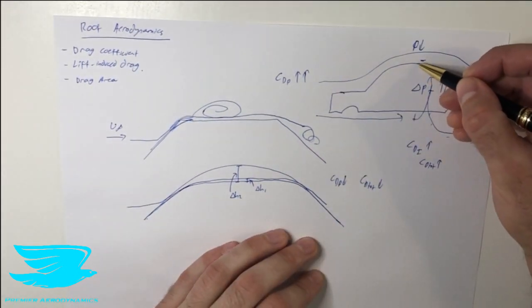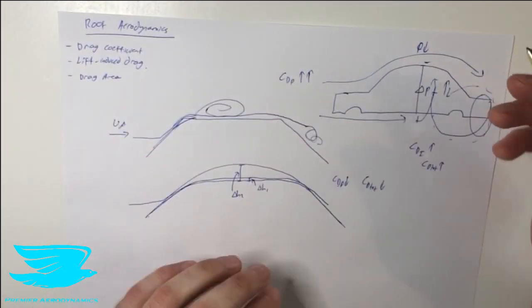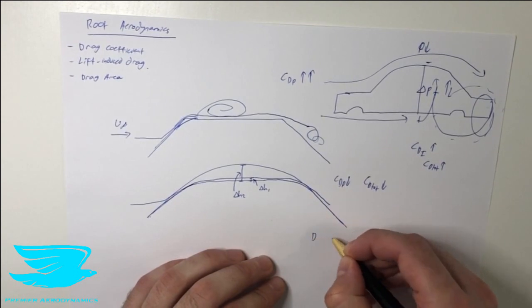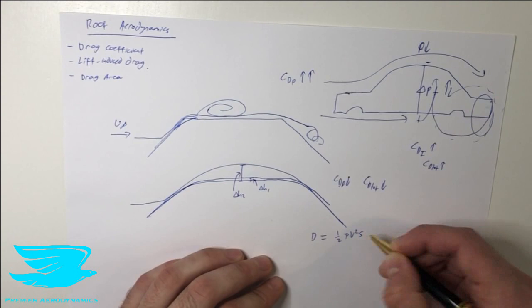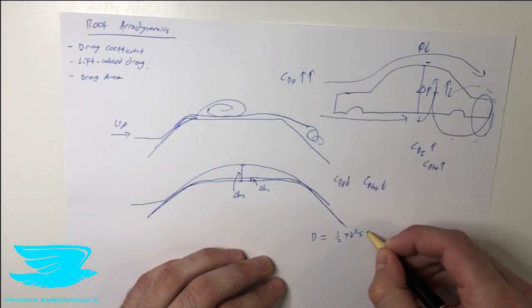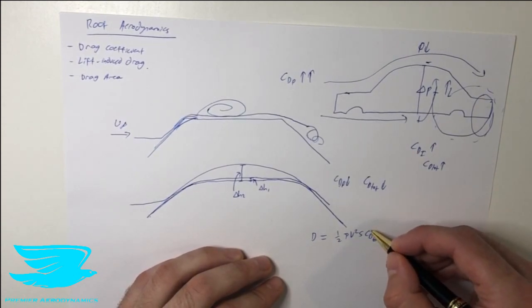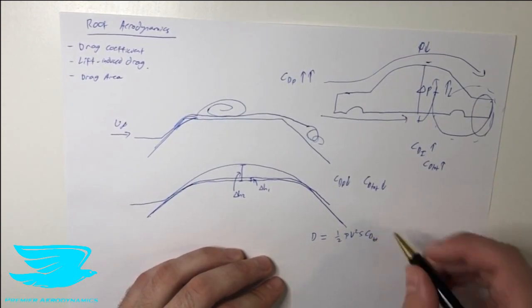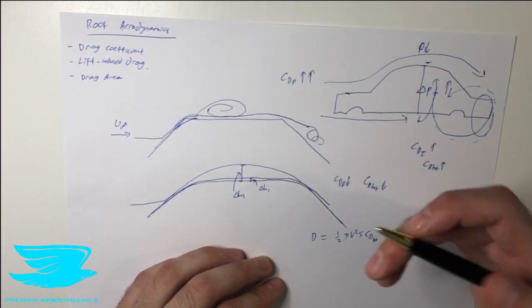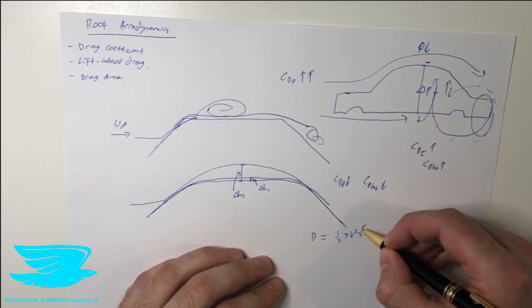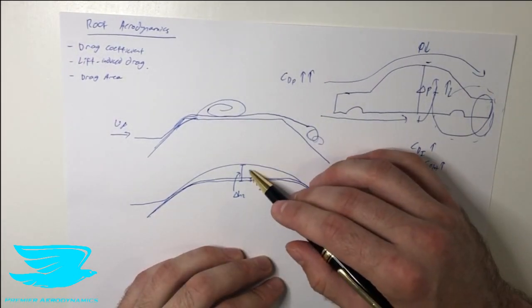Now remember that the drag is equal to half times the density times the velocity squared, times by the cross-sectional area, times the drag coefficient for the total drag. So if we reduce the total drag coefficient, that doesn't necessarily mean that we reduce the overall drag of the car. This comes into a topic called the drag area. If we increase the cross-sectional area, the drag can also increase, and this is what happens with rounding the roof too much.